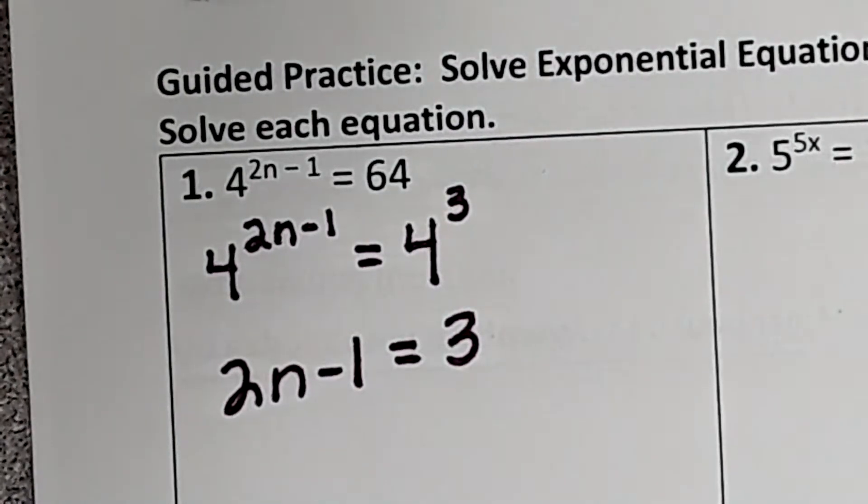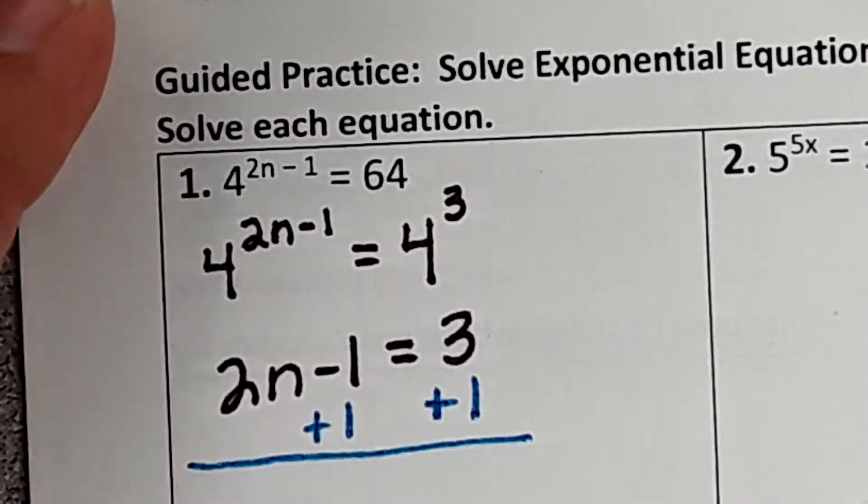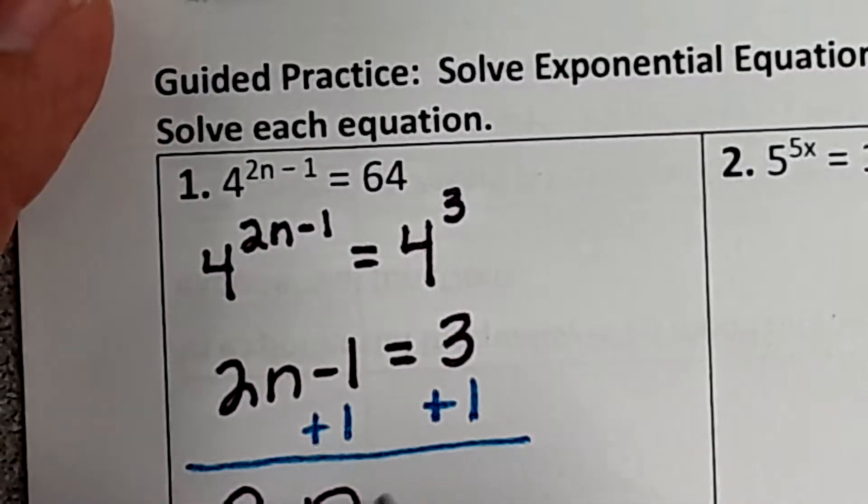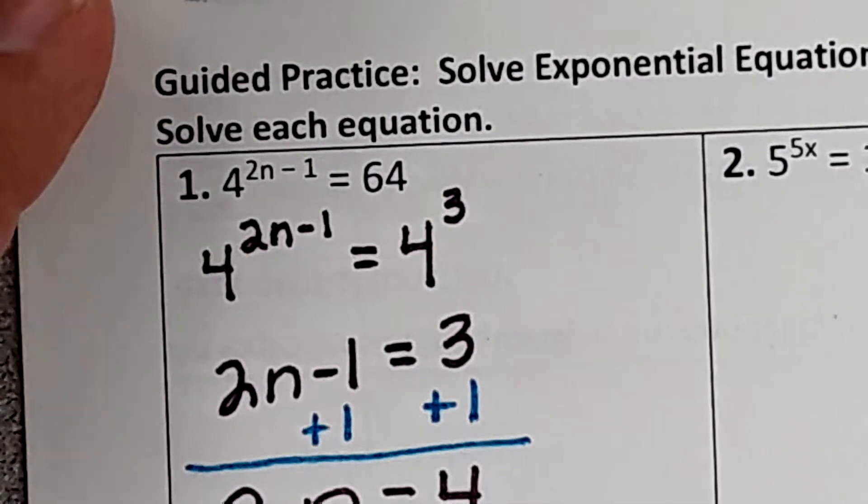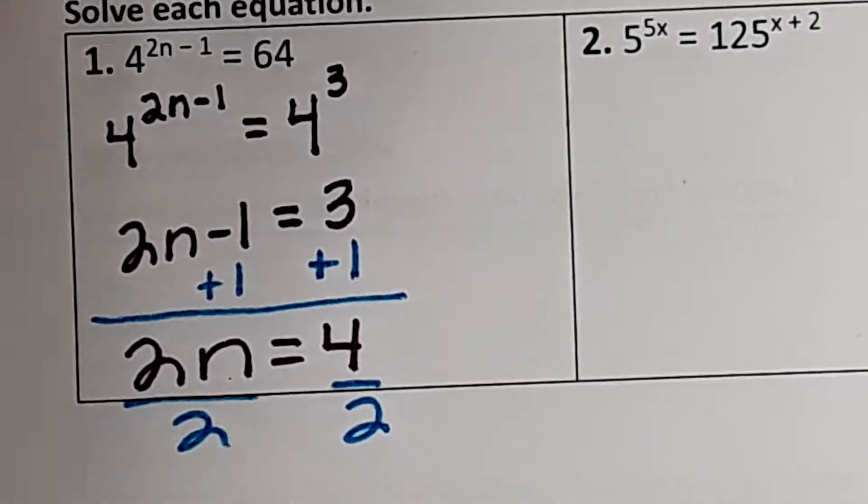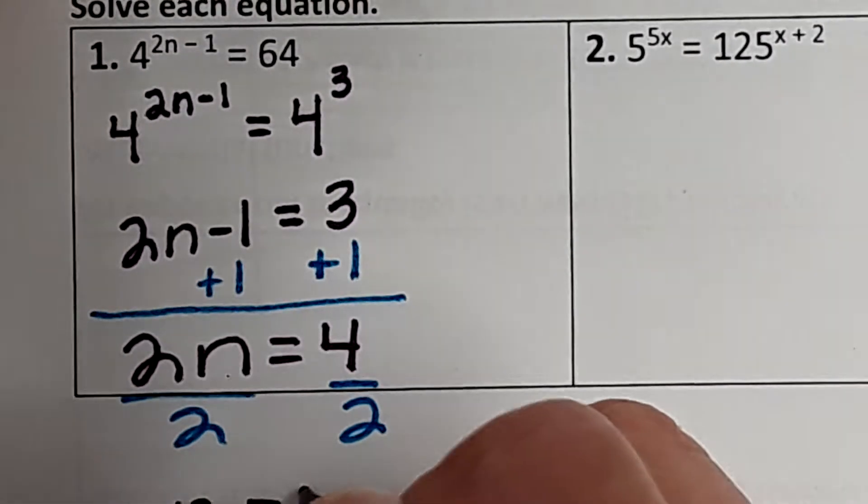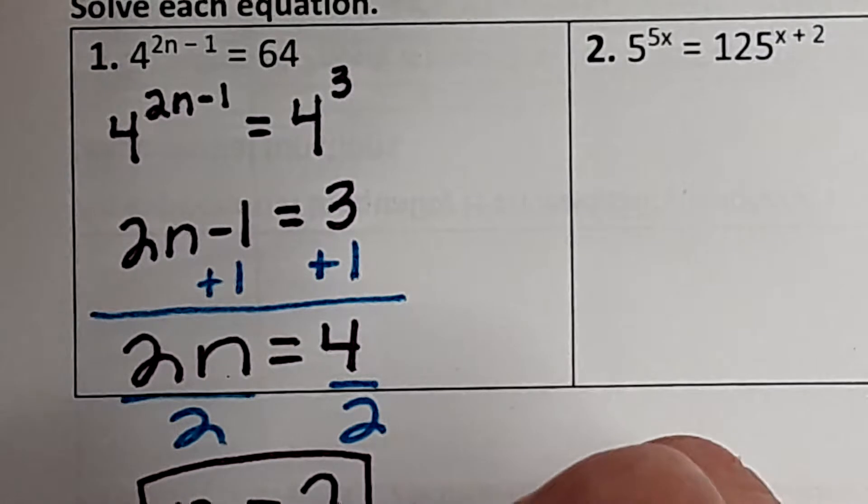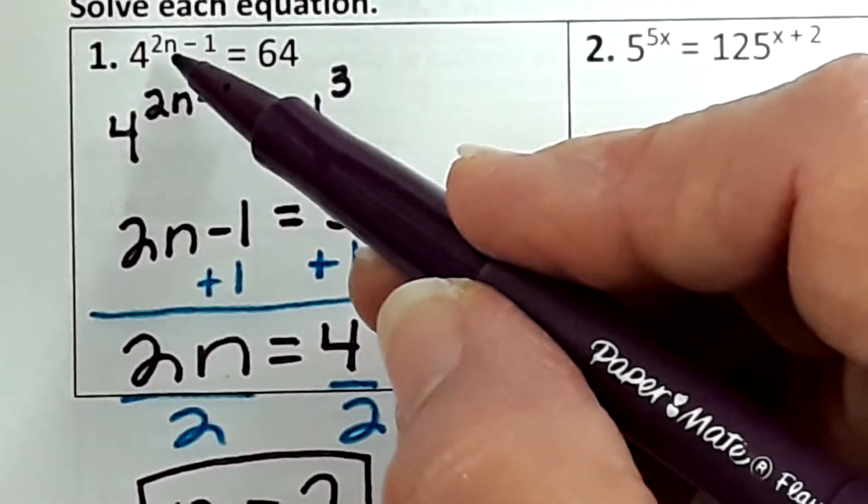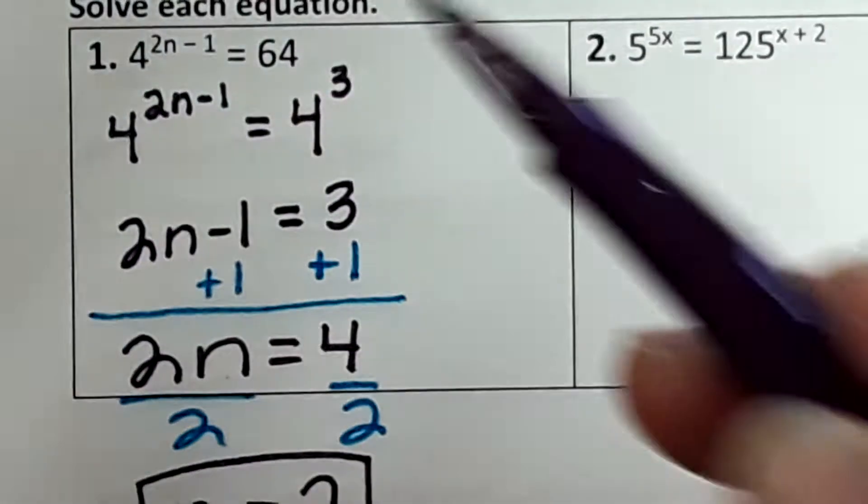Now the bases are the same, so we can set the exponents equal to each other. So when you make the bases the same, you can set the exponents equal to each other and solve for the n, or the variable. And then we're going to divide by 2. So that means if we put 2 in for this n, 2 times 2 is 4, 4 minus 1 is 3. 4 to the third power is 64, it works.